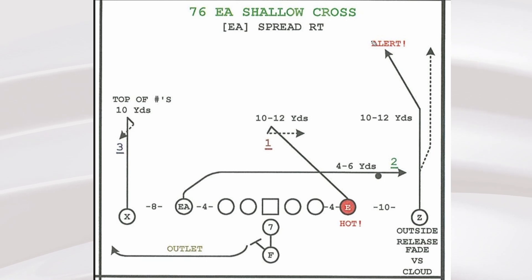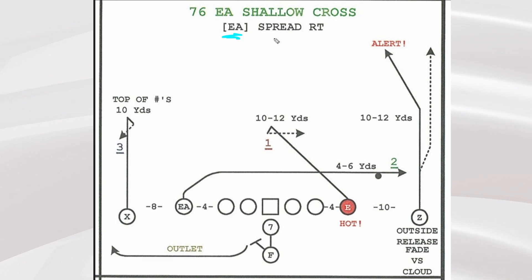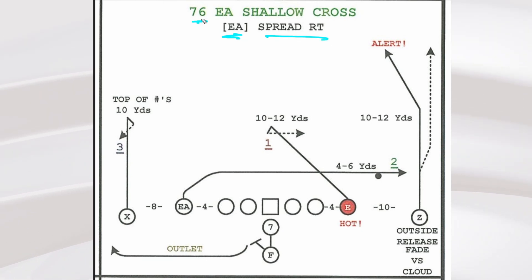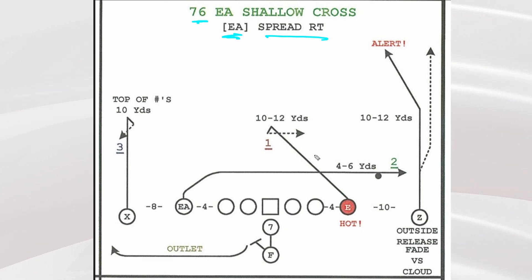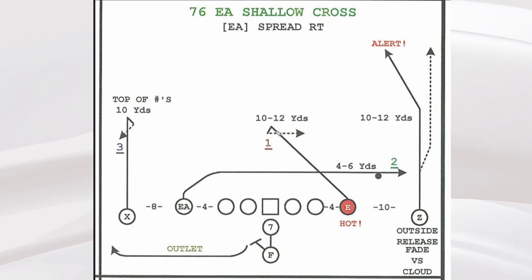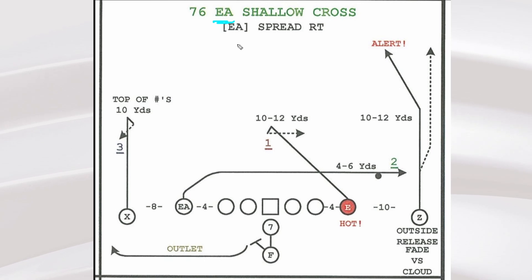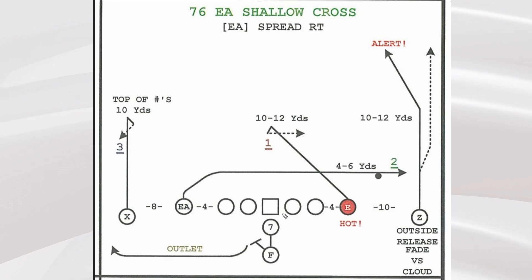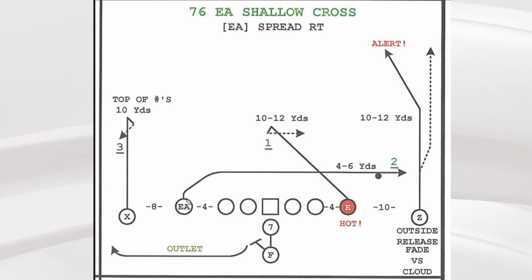So the first one here is from Matthew's question — we'll go through exactly what the play is. Eagle is 10 personnel, West Coast world, spread right formation. 76 is the pass protection — that's a solid pass pro. We're going to get a hot off the first backer to the strong side. I appreciate drawings without the defense so we can cleanly focus on the concept. Eagle shallow cross tells you who's running the shallow cross, and then everybody else has to know what they have on shallow cross. Let's go through the reads. Really, let's go through the construction of the play first. There's that shallow cross.